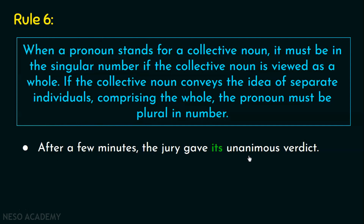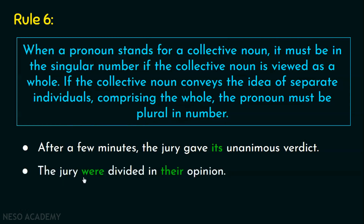For example, 'After a few minutes, the jury gave its unanimous verdict.' The collective noun is 'jury.' The word 'unanimous' means all together, so the jury is acting as a single body — hence the pronoun 'its' is singular. In 'The jury were divided in their opinion,' the verb 'were' is plural, which shows that jury is being treated as plural — so the pronoun 'their' is also plural. This rule needs a lot of revision and understanding of sentences, so practice questions of this type rather than just memorizing the rule.